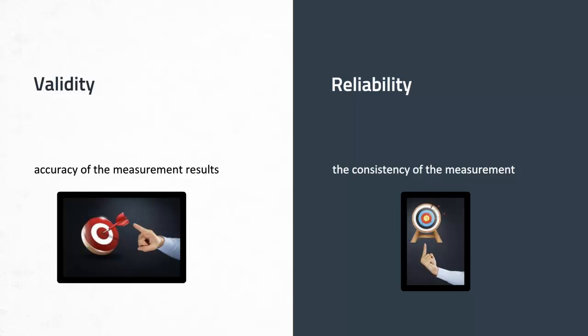Here you can see a picture of a bullseye, and the arrow is right in the center. That represents validity — we want our measurements to hit the bullseye in terms of what they're measuring. As an example, consider a math test a teacher created aimed at measuring fraction competency. This test only has questions about fractions and not multiplication, because adding multiplication questions would make it less valid.